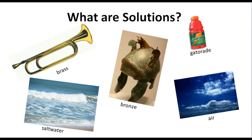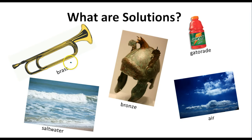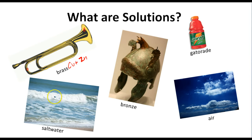They are mixtures, or homogeneous mixtures, of different components. For example, if we take a look at the brass trumpet here, we know that brass is an alloy — a mixture of two or more metals. In this case, brass is made up of copper and zinc, nice and evenly mixed together. So a sample of the copper from this trumpet will be identical to a sample of the copper from another part of this trumpet.